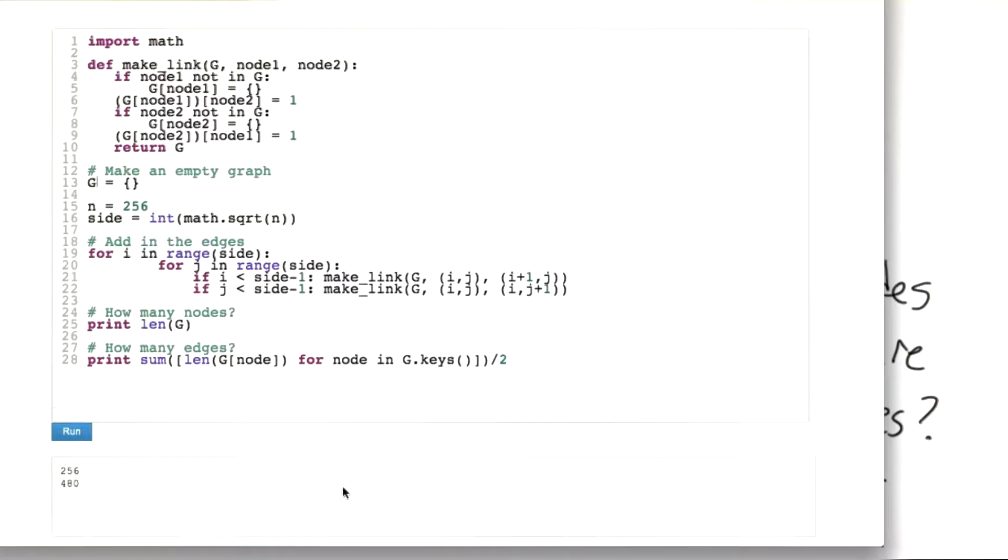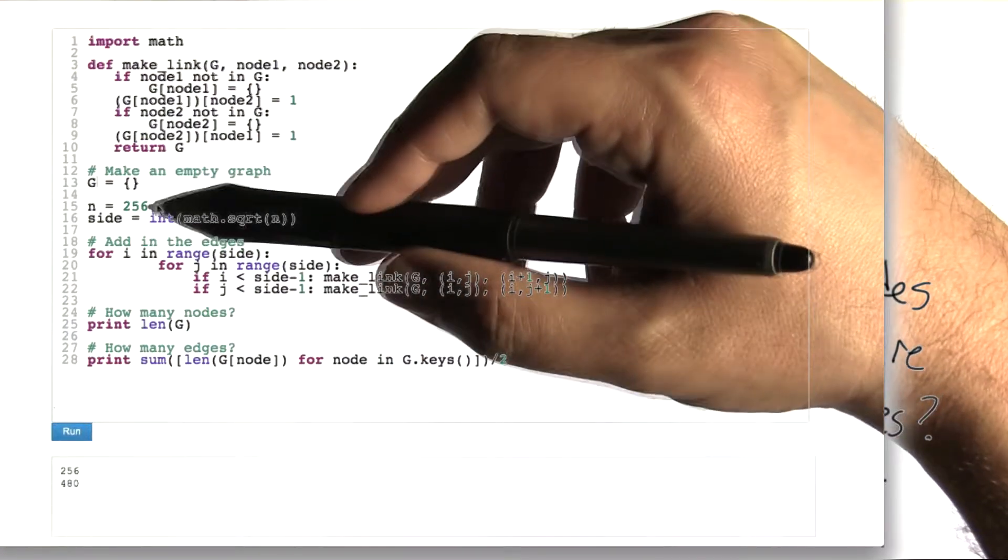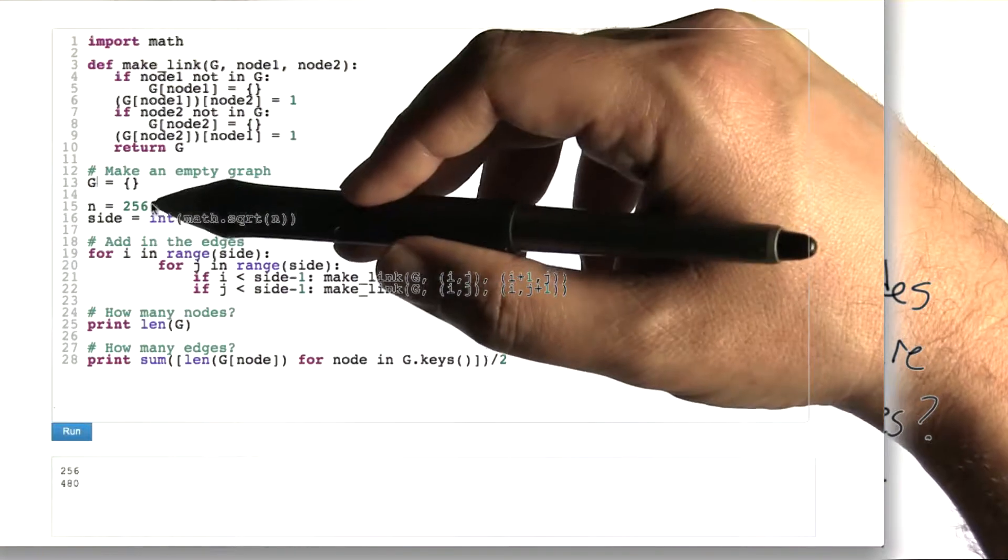So we can answer this question pretty quickly with the help of a little program. Like before, I've got this make link function and I'm going to make an empty graph with 256 nodes which is going to be arranged as a grid.